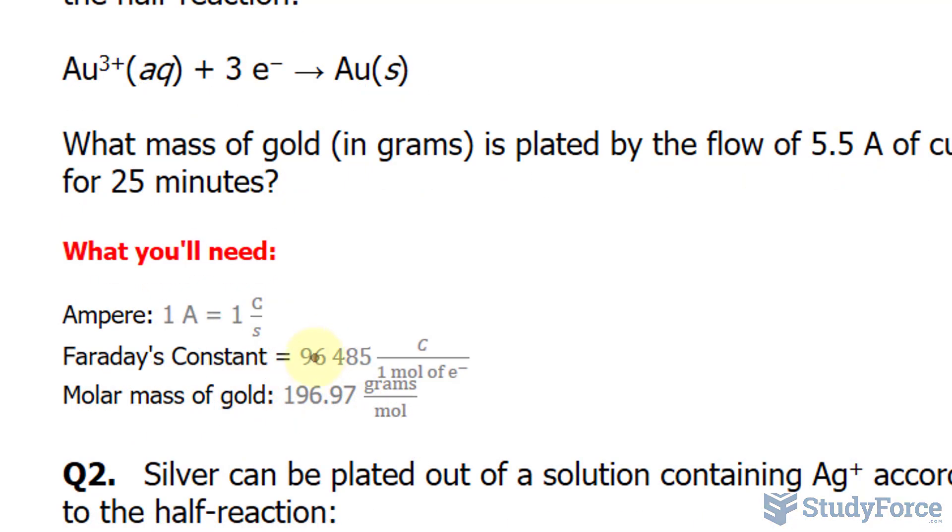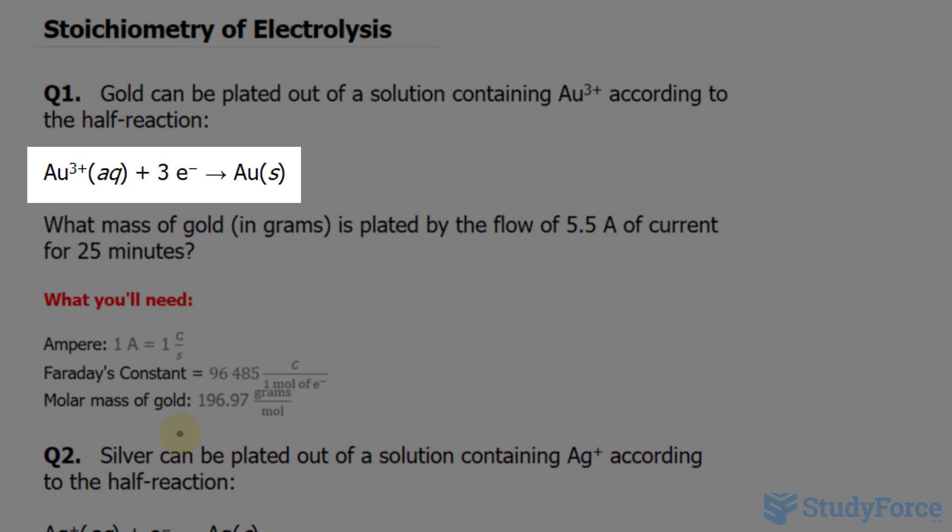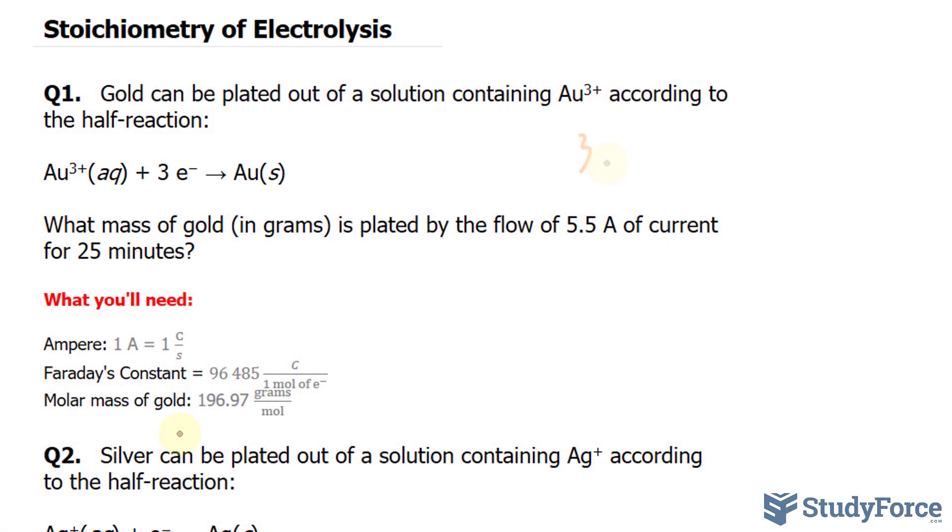Faraday's constant is also written and that relates coulombs and moles of electrons. The molar mass of gold, which we'll need to find the mass of gold, is written right here. The purpose behind the half reaction is that it tells us the stoichiometric relationship between the moles of electrons and the moles of gold, Au. As you can see, there are 3 moles of electrons per every 1 mole of gold.